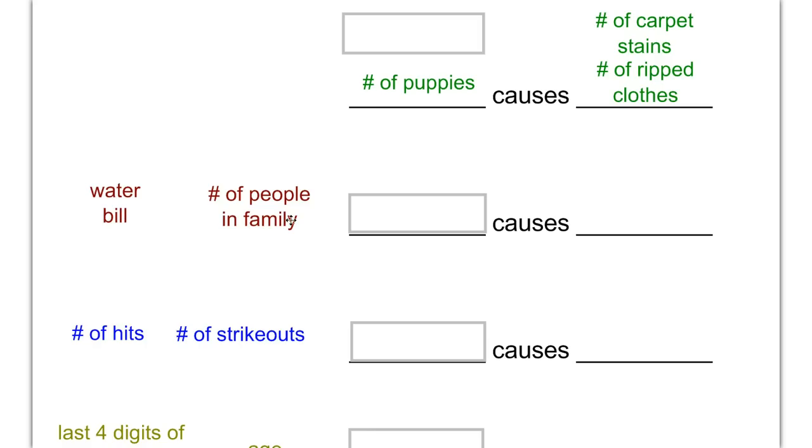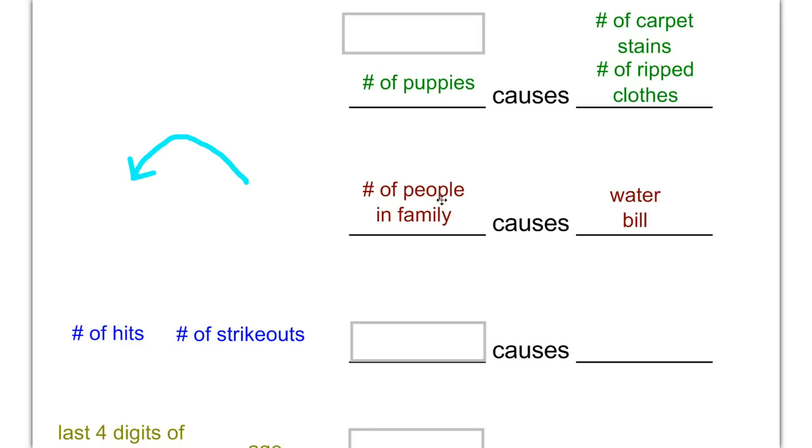Here we have water bill and the number of people in the family. In this particular example, it looks like one of these actually could cause the other. It would make sense if the number of people in your family did affect your water bill. So in some of these problems, we're not going to have a lurking variable. In this case, it's actually just a trick problem. Yes, the number of people in the family sure does cause your water bill to go up, because the more people you have taking showers, using dishes, things like that, the more water you're going to use.